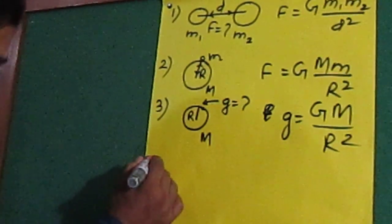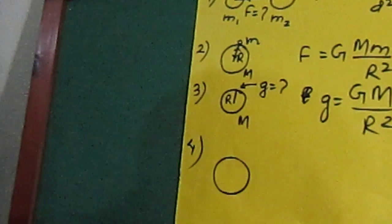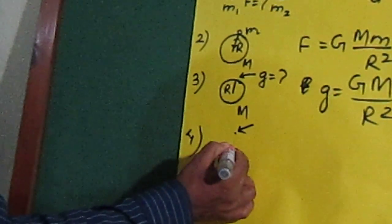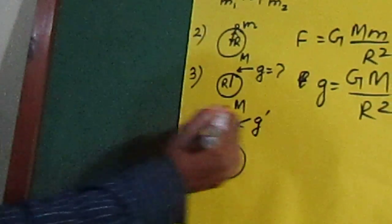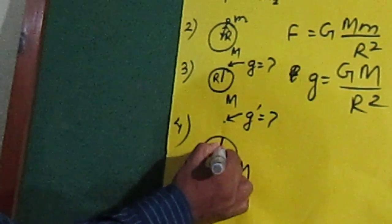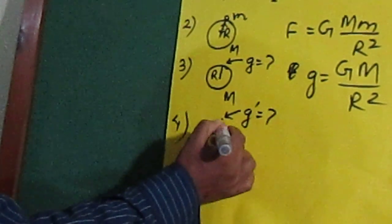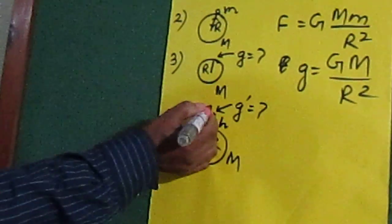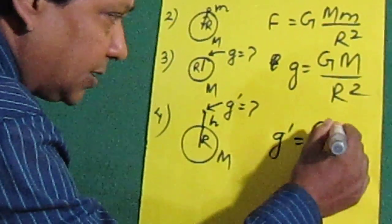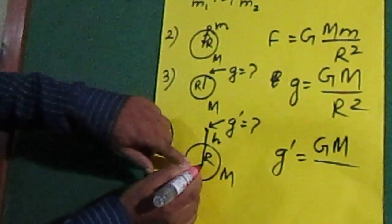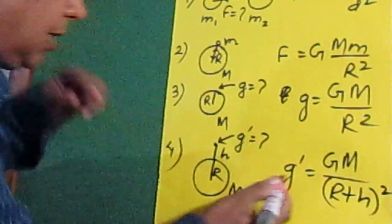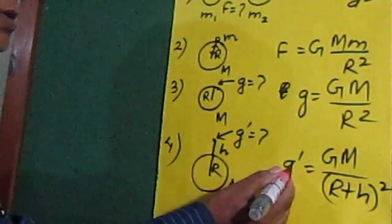Now the fourth equation. If we want to find the acceleration due to gravity at a certain height above the surface — denoted by g dash — where the heavenly body has mass M and radius R, and the height from the surface to that point is S, then g dash equals G times capital M divided by the quantity R plus S, whole squared. This equation is used to calculate the acceleration due to gravity at a certain height.